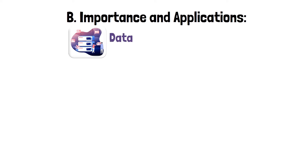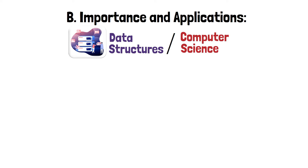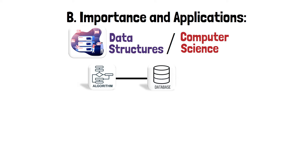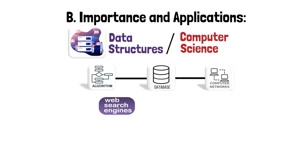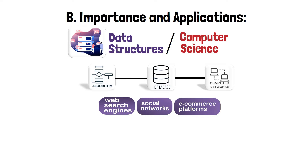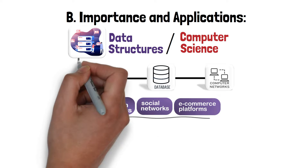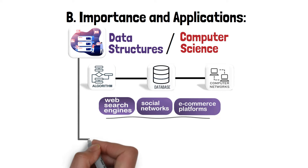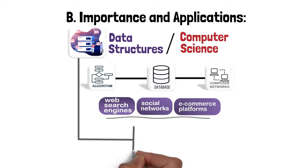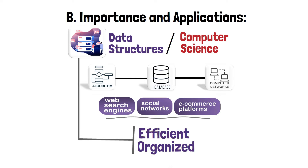Importance and Applications. Data structures play a critical role in many areas of computer science, including algorithms, databases, and computer networks. They are used in various applications, such as web search engines, social networks, e-commerce platforms, and more. In each of these applications, data structures help to manage and manipulate large amounts of data in an efficient and organized manner.